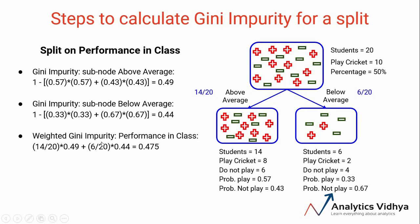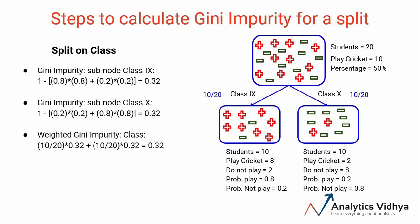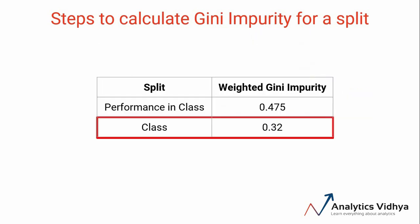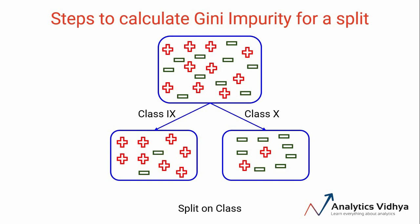Similarly, we calculated the Gini impurity for the split on class, which comes out to be around 0.32. I strongly recommend you do these calculations on your own and match your values with the ones shown in this slide. Comparing the two Gini impurities, the split on class has a lower value of 0.32 compared to 0.475 for performance, so class will be the first split of this decision tree. For each split we calculate the Gini impurity, and the split producing the minimum Gini impurity is selected, as minimum Gini impurity means the node will be more pure and homogeneous. In the next video we'll look at another method for deciding the best split — chi-square.